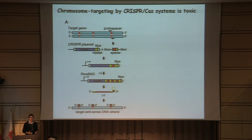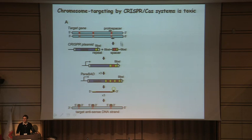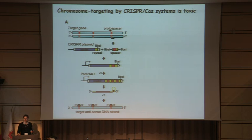We set up a system to address what would be the outcome of chromosomal targeting. We essentially cloned a very tightly controllable plasmid system where we could introduce any spacer of interest targeting any particular gene and do this in a sequential manner, building up arrays of multiple spacers targeting a gene of interest. We designed this so that when transcribed and processed, they would target only the DNA and not any RNA transcript, because we thought this is a DNA targeting system.